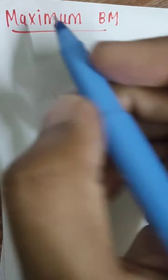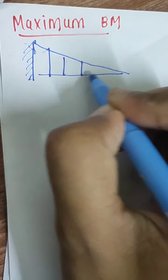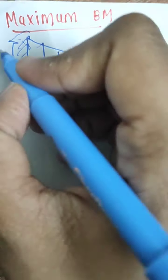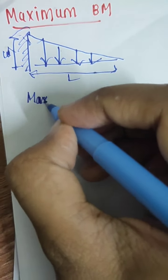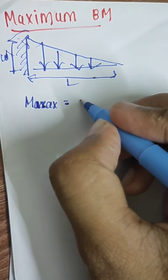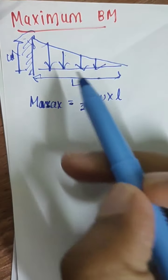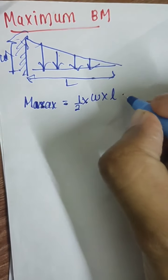Welcome to my channel. In this video we find the maximum bending moment. Consider a UVL (uniformly varying load) acting downwards with intensity w Newton and length l. The resultant force Mx is the area of the triangle: half into w into l, which equals wl/2, acting at a distance of l/3 from the free end.